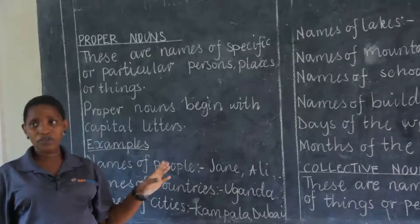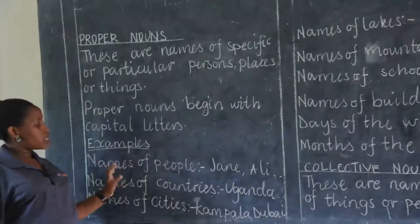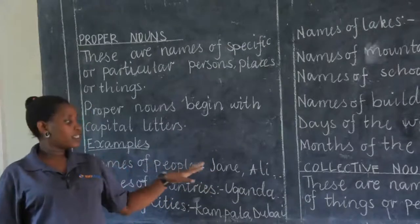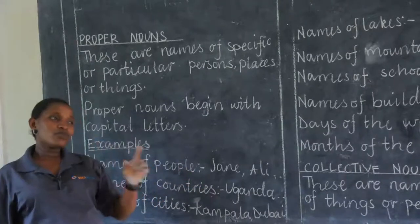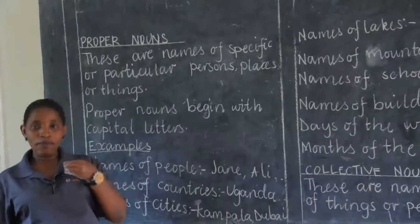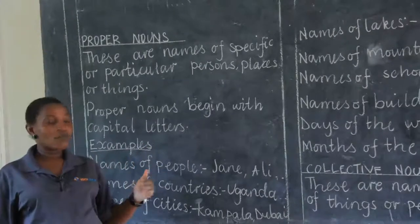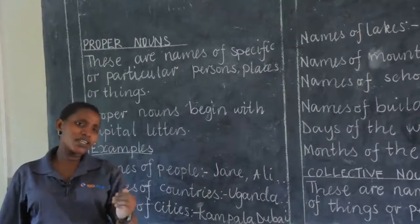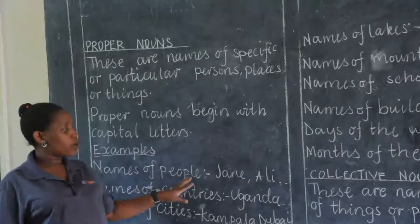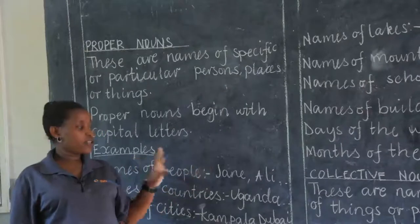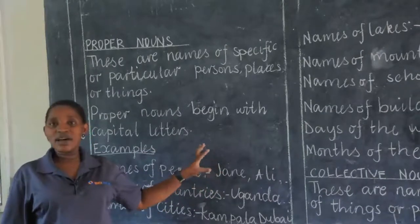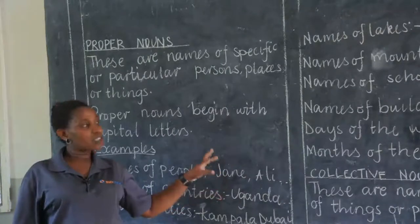Now let's look at examples of proper nouns. Names of people — when you are writing names of people, for example you want to write Anjiako, my name, it should begin with a capital letter. The moment you write my name with a small letter, you have abused me — you have equaled me to a jerry can, to a general thing. Names of people like Jane, Ali, your mother's name, your friend's name — whether surname, Christian name, or local names — they must begin with a capital letter, because they are proper nouns.